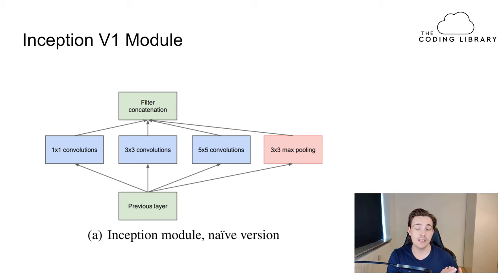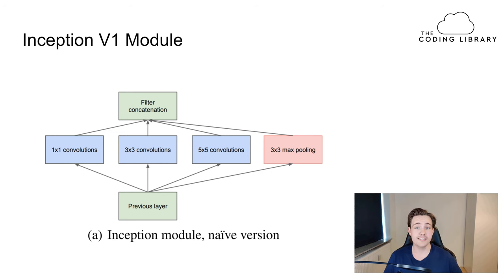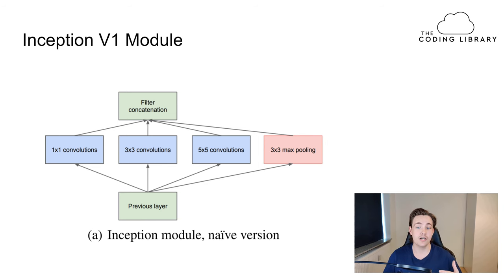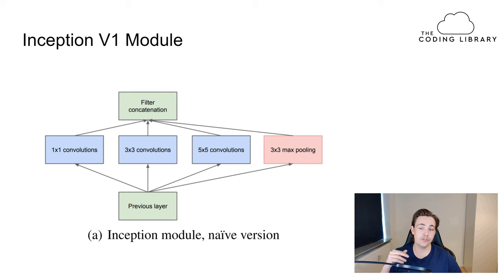The idea behind Inception is that we go wider per layer by doing multiple transformations per layer. In the Inception version 1 module, we do four different transformations on one layer: a 1x1 convolution, a 3x3 convolution, a 5x5 convolution, and a 3x3 max pooling. We then perform all those operations and concatenate all the results — this is the filter concatenation in our Inception module — and the combined output is fed to the next Inception module.